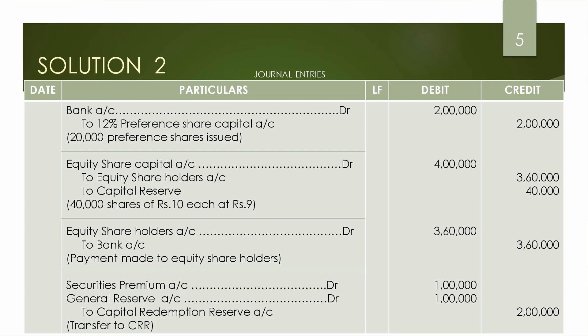We cancel the equity shares on the balance sheet. Since the buyback is at a discount of Rs. 9, we pay 40,000 into 9 = 3,60,000 to the bank. The difference of 40,000 goes to capital reserve. In summary: face value 40,000 shares × Rs. 10 = 4,00,000, payment 40,000 shares × Rs. 9 = 3,60,000, and the balance of 40,000 is transferred to capital reserve.